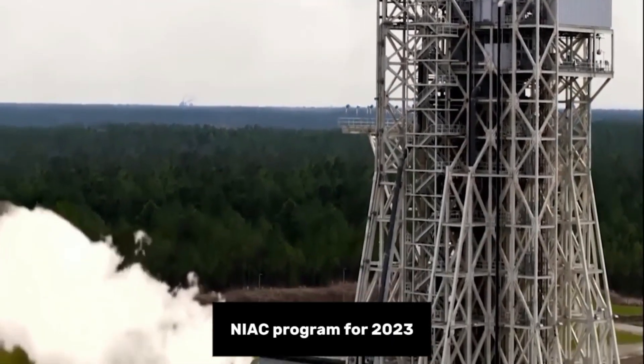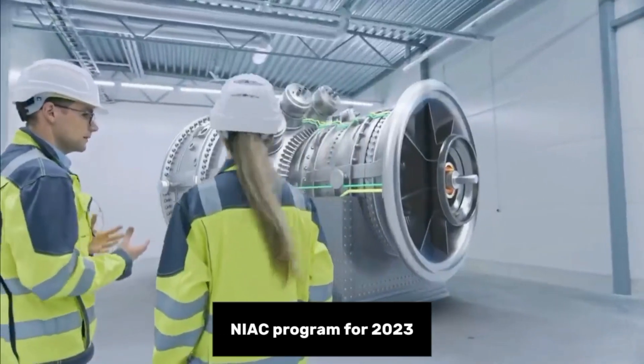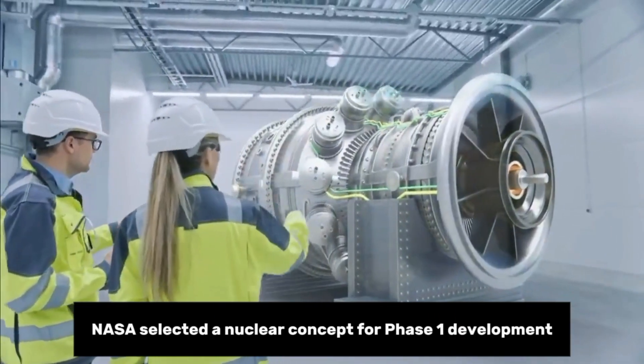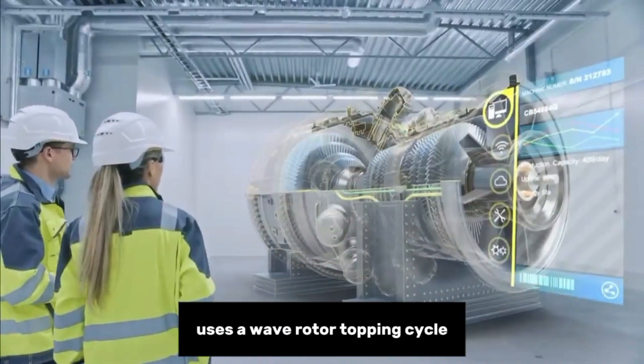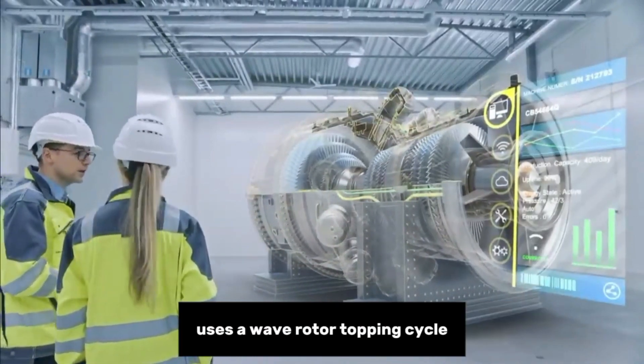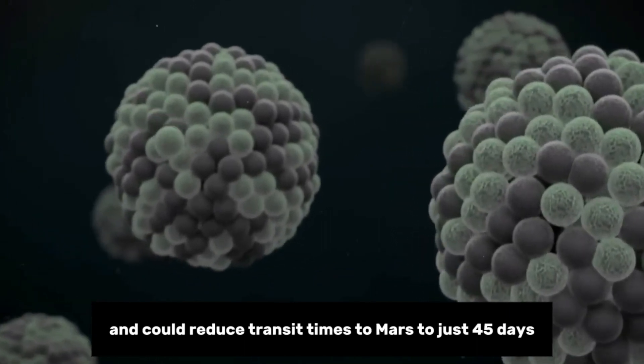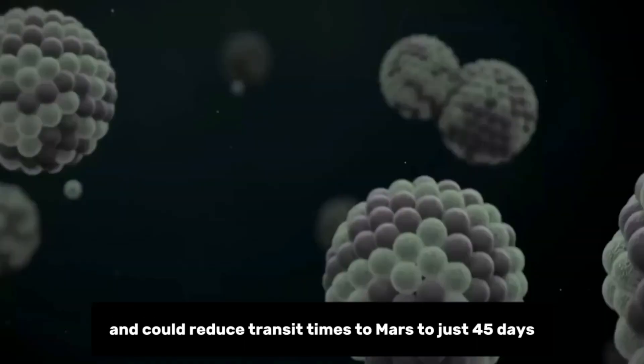As part of the NASA Innovative Advanced Concepts (NIAC) program for 2023, NASA selected a nuclear concept for Phase 1 development. This new class of bimodal nuclear propulsion system uses a wave rotor topping cycle and could reduce transit times to Mars to just 45 days.